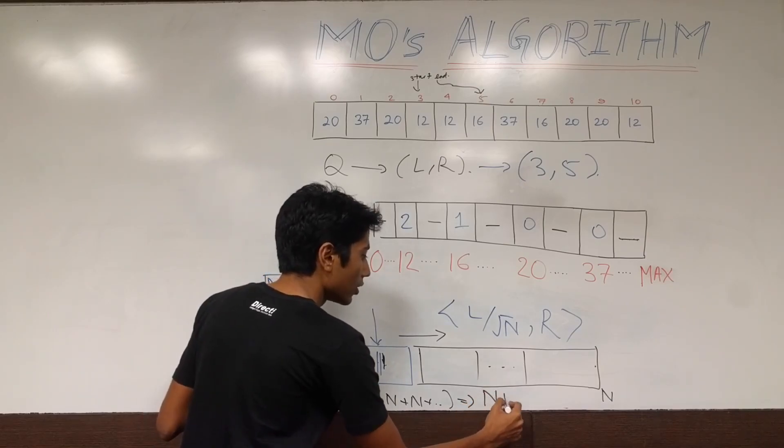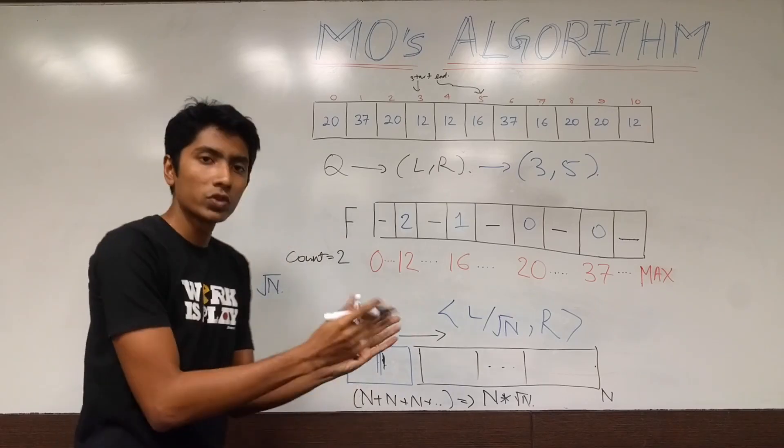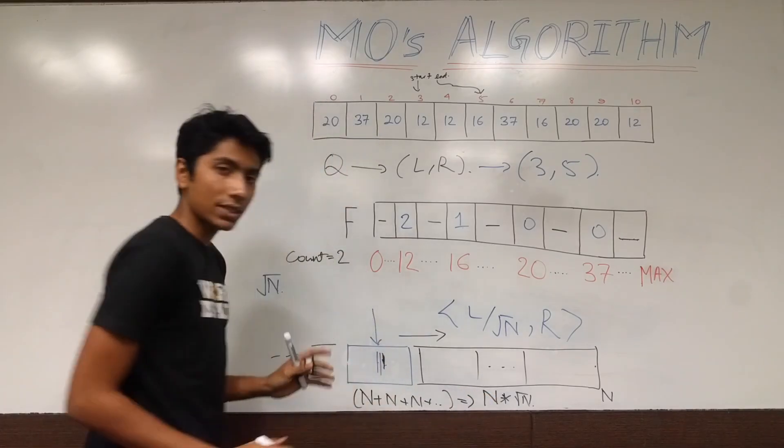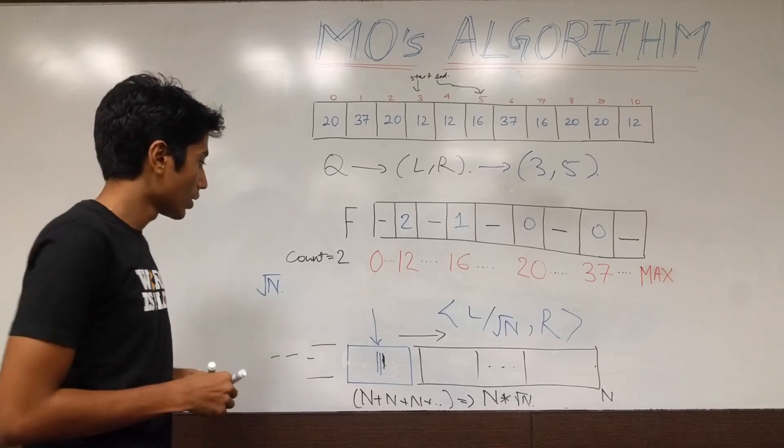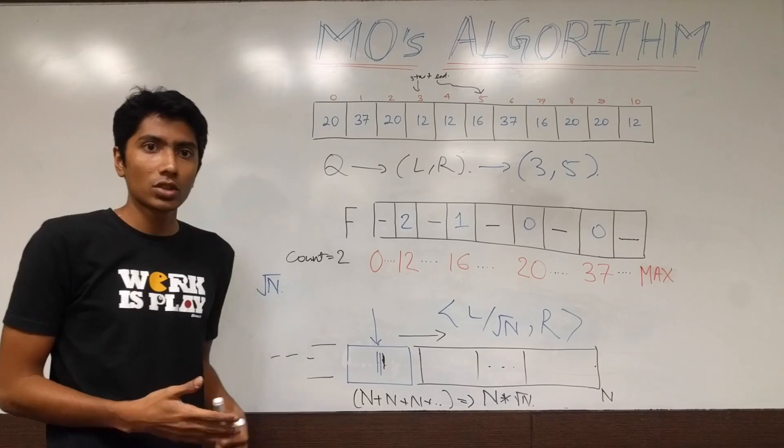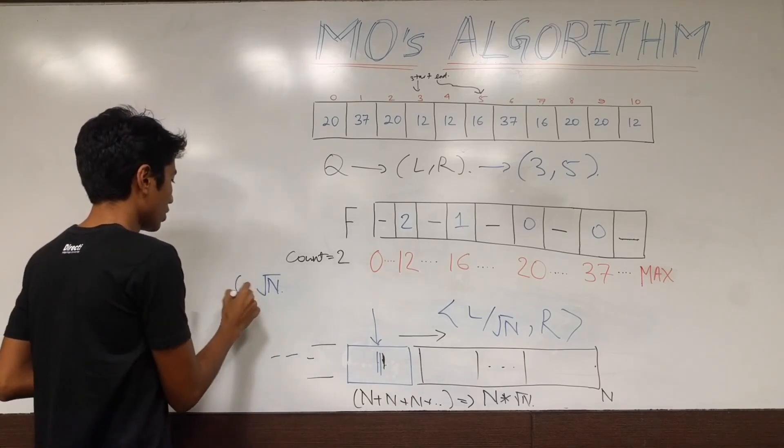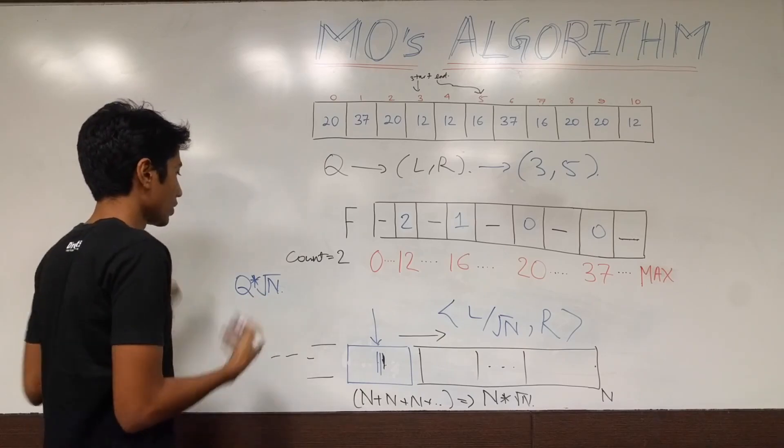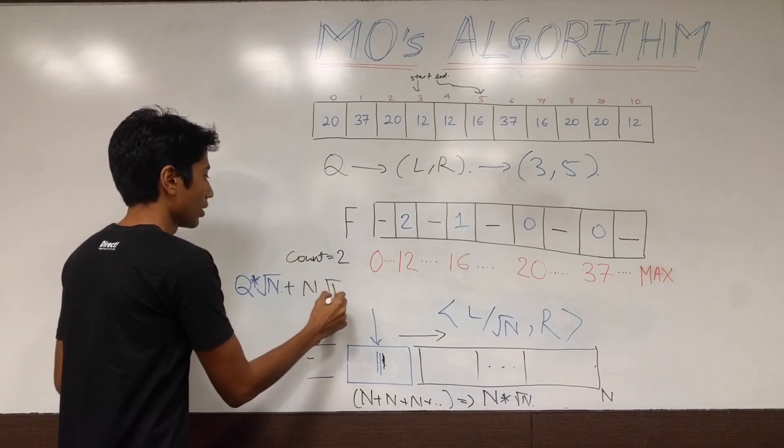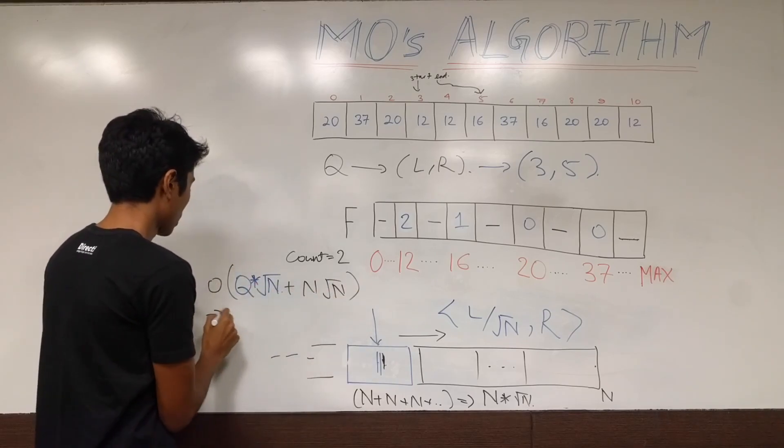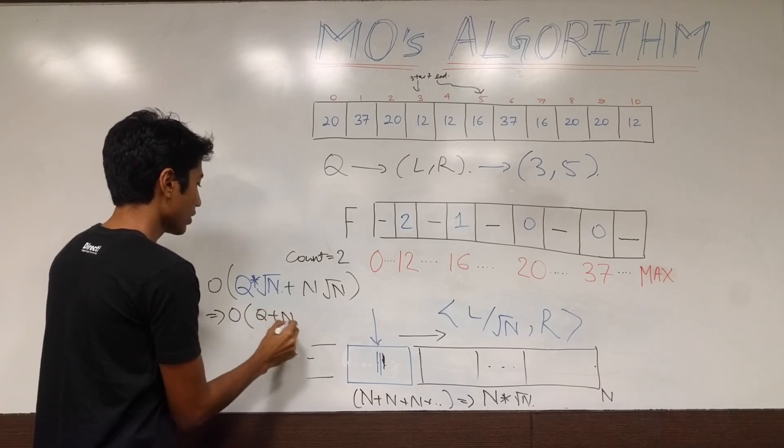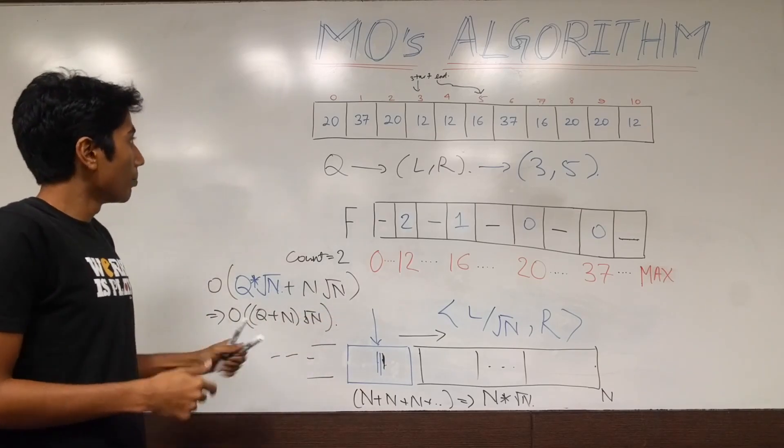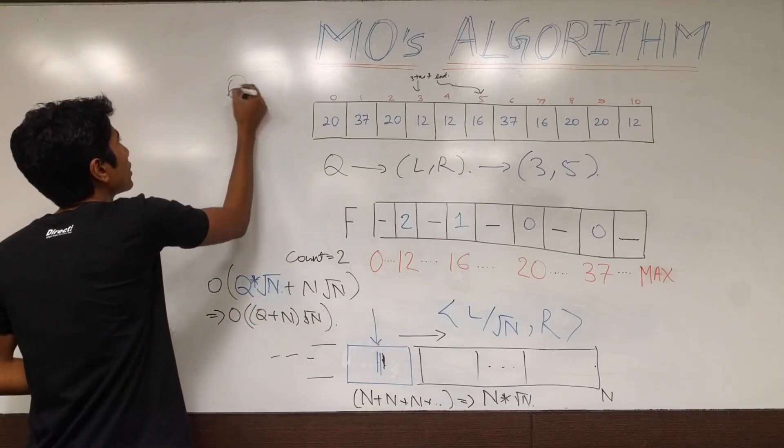So, that gives us, n root n moves of the right pointer at most. Fine. n root n is the worst case scenario for right moving. What about left? We just said that left moves by root n at most for each query. So, q root n. Number of queries into root n is the moment for the left pointer. Overall complexity is equal to q plus n root n common. Order of that. So, this is a big improvement over the original complexity that we had of q into n.